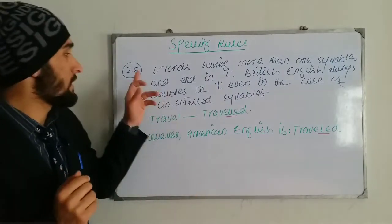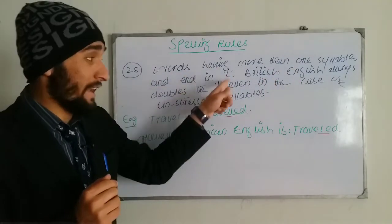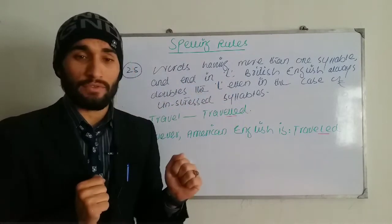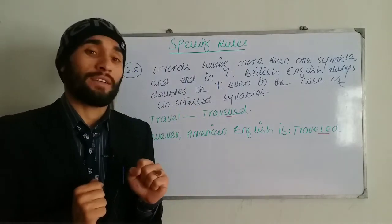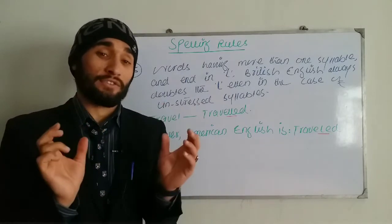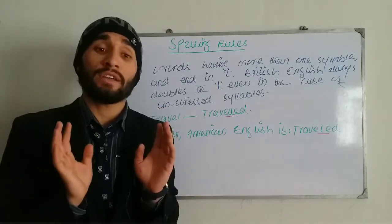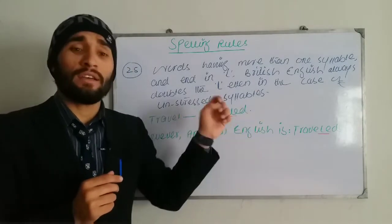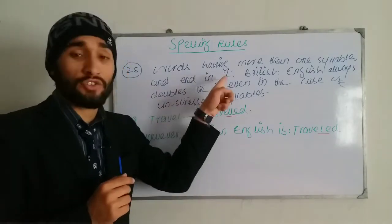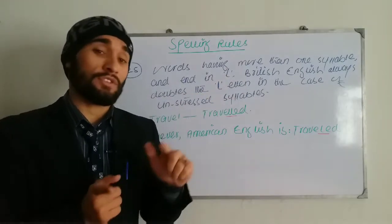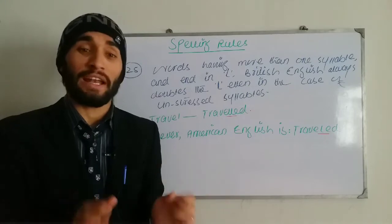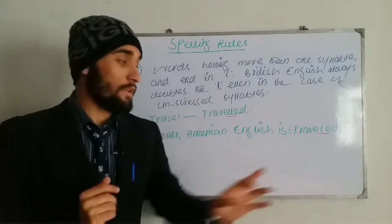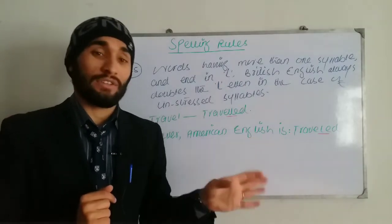Rule twenty-five: words of more than one syllable ending in L, in British English, always double the L even in the case of unstressed syllables. For example, 'travel' has two syllables, and British English doubles the final L, giving 'traveller'. However, in American English, the L is not doubled — it remains a single L, giving 'traveler'.